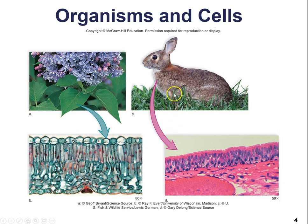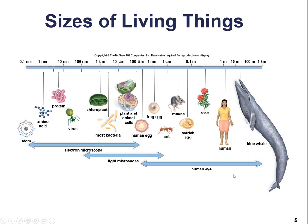This illustrates that cells make up leaves in plants and cells make up living organisms like rabbits. You could take any tissue, section it, stain it, and look at it under a microscope. This is what we went through in our last lab using the microscope. For both examples, you have to add some sort of stain to be able to visualize these cells.